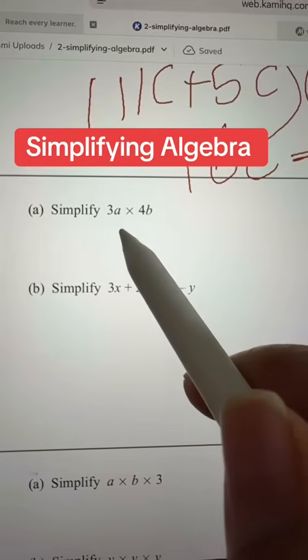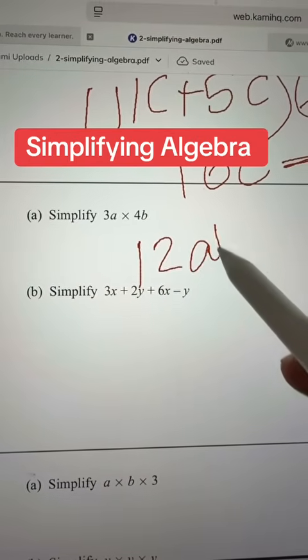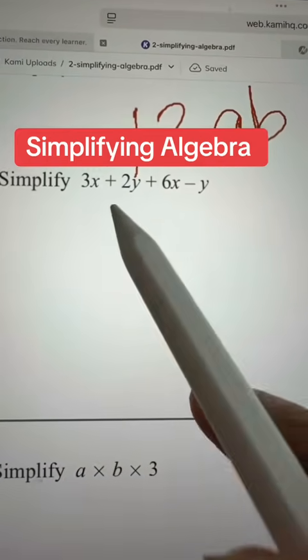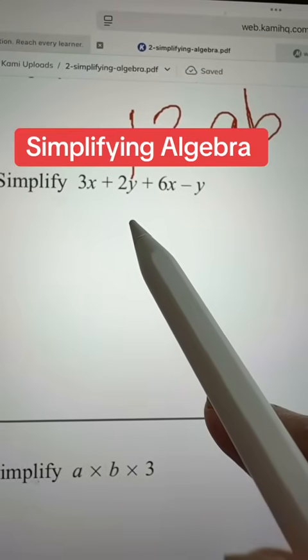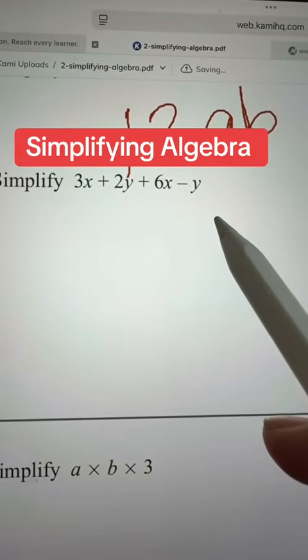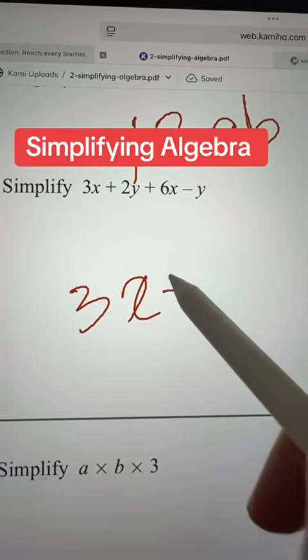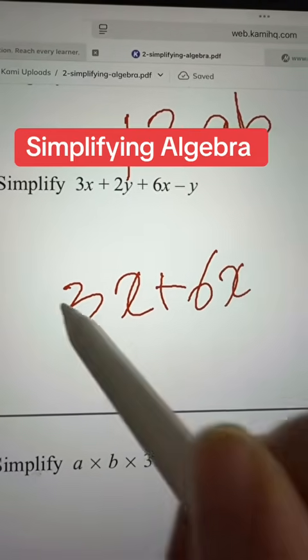Again you have like this one, so just multiply them 12ab. Now you have 3x plus 2y plus 6x plus y. Get all the x's together, 3x plus 6x.